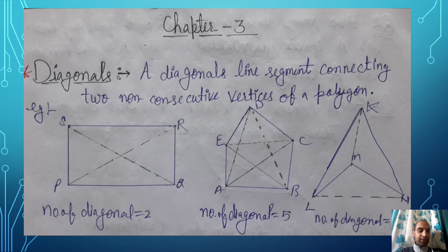First, what do you mean by a diagonal? That is the important thing. A diagonal is a line segment connecting two non-consecutive vertices of a polygon. In simple language, it is a line which is joining two distinct points of any polygon.